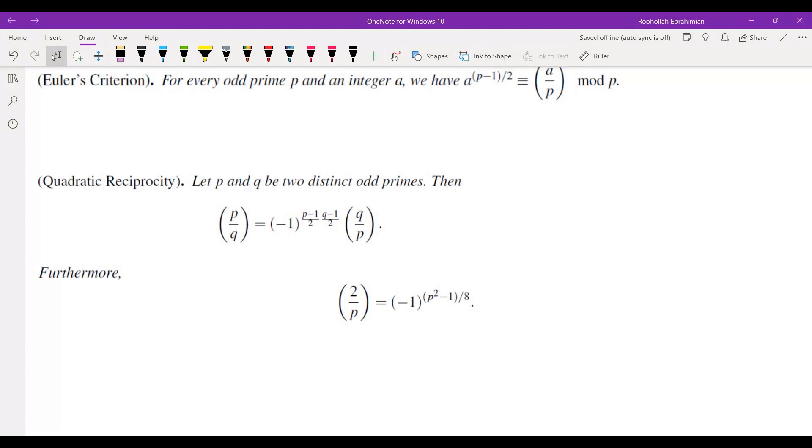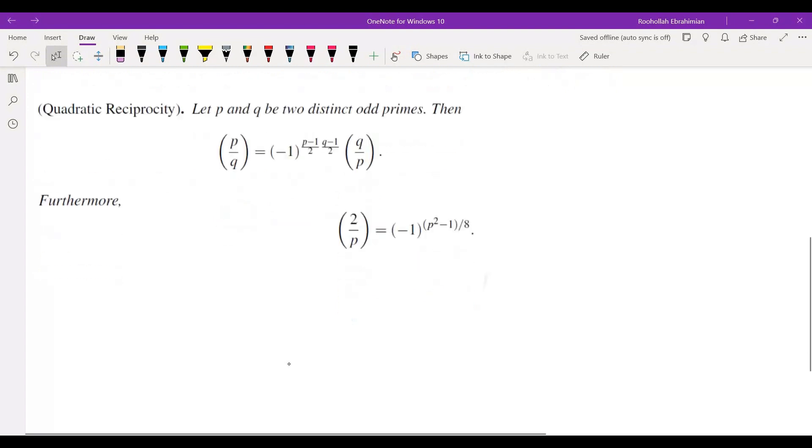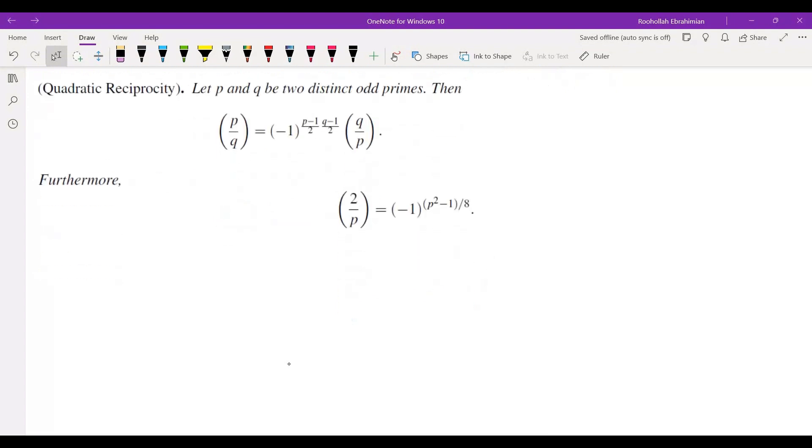Let P and Q be two distinct odd primes. Then P over Q and Q over P can be related. So P over Q is negative 1 to the power of P minus 1 over 2 times Q minus 1 over 2 times Q over P. And 2 over P is negative 1 to the power of P squared minus 1 over 8.